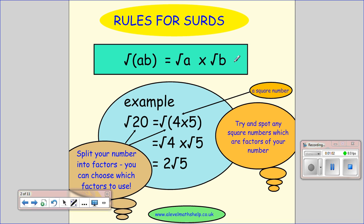If you can see a square number in your number, then you can take it out. You can take its square root and it's easier.